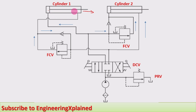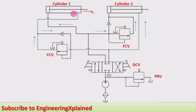Therefore extending of cylinder one is taking place. Then the fluid on the rod end side of cylinder one will be going back through the check valve — the check valve is open — and through that it goes to the tank.